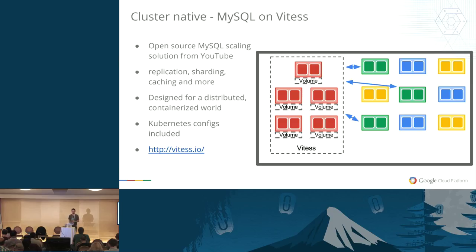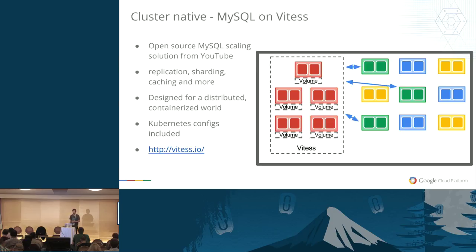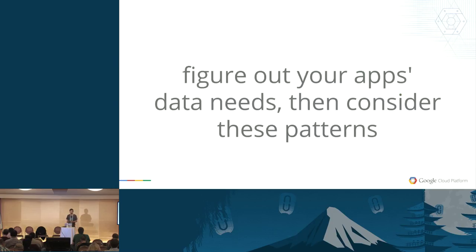The Kubernetes configuration is included in the examples directory on the GitHub repository. Essentially, you need to physically figure out your app's data needs, then consider the patterns I talked about before implementing them. You can use the service abstraction as part of running things natively in a cluster. You'll probably end up with multiple data services — one for your key-value stores, one for your MySQL service, one for cache. You may even have different ones for users versus other application data, logs, and so on. A service-oriented architecture is really the way to go.